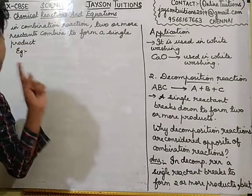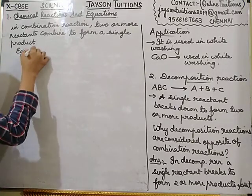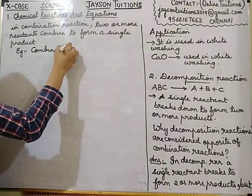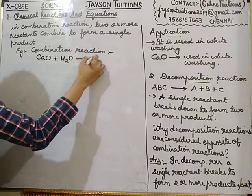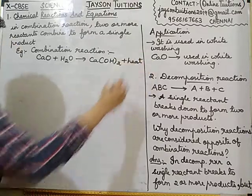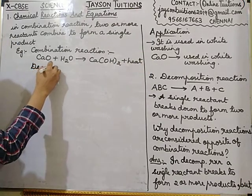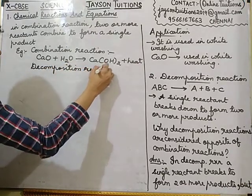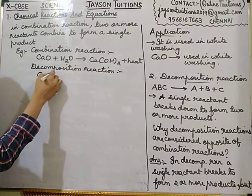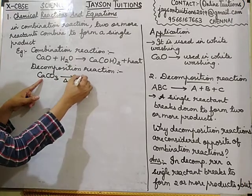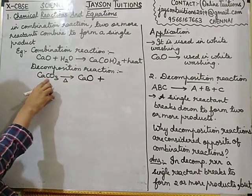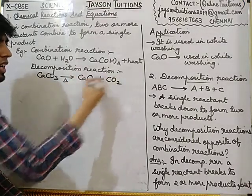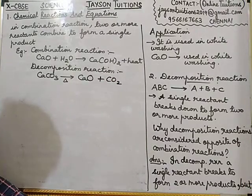You have to give examples for both. Example for combination reaction: CaO + H2O gives Ca(OH)2 + heat. Example for decomposition reaction: CaCO3 on heating gives CaO plus CO2 — calcium carbonate decomposes into calcium oxide and carbon dioxide. These examples show the contrast between the two types.